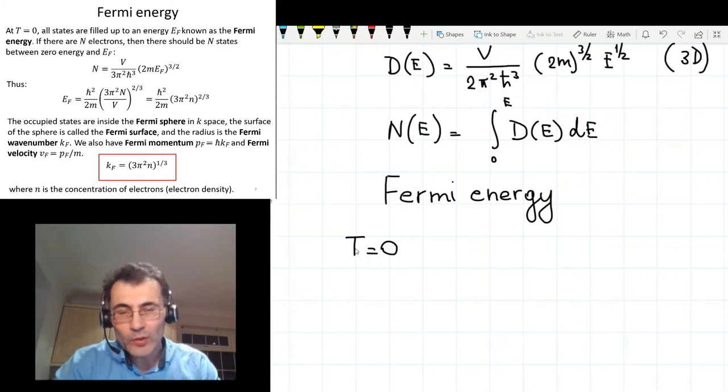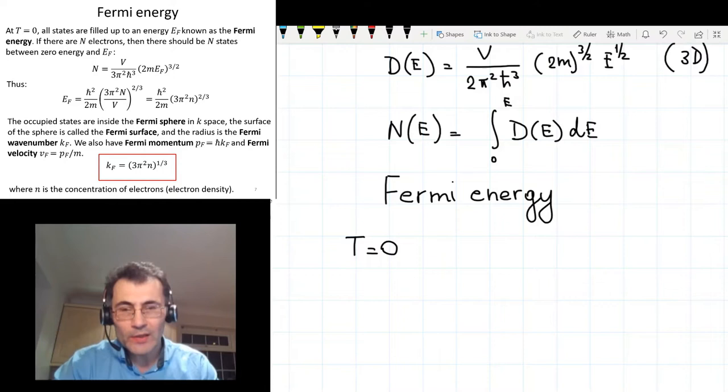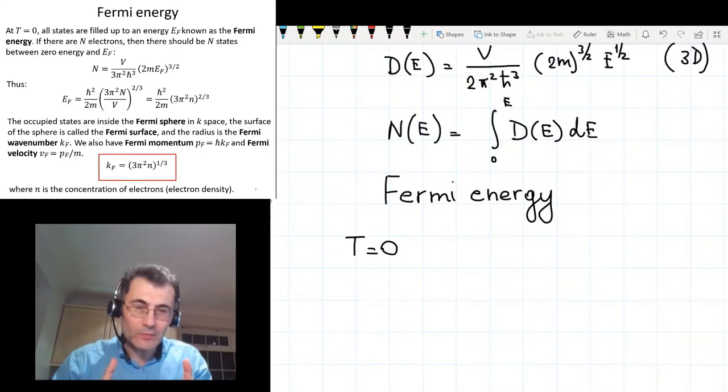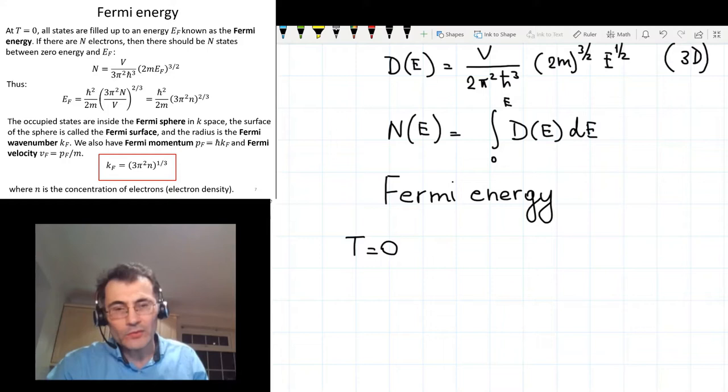As we add more and more electrons, these electrons also would like to go to the state with the lowest possible energy, but this state is already occupied. Pauli principle tells us that it's not possible and they have to go to states with the higher energy. And for that reason, if we have large number of electrons, they will occupy a sphere in the K space. The surface of the sphere which separates occupied states from the empty states is called the Fermi surface. And the energy which corresponds to the energy of electrons on the Fermi surface is called the Fermi energy.